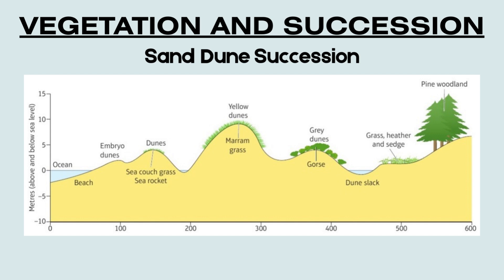Sand dune succession, also called a psammosere, is the natural process by which plant communities develop over time on coastal sand dunes, moving from bare sand to mature woodland. It starts at the beach, where wind deposits dry sand just above the high tide line. This creates small embryo dunes, colonized by pioneer plants like sea couch grass and sea rocket. These plants are adapted to survive harsh, salty, and dry conditions. They trap more sand and begin to stabilize it. As more sand accumulates, larger fore dunes and yellow dunes form, dominated by marram grass, which has deep roots and can tolerate burial by sand. These dunes are still quite mobile and have a yellow color due to the high sand content.